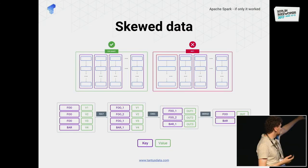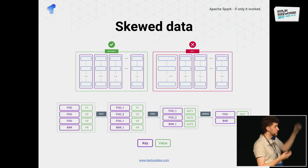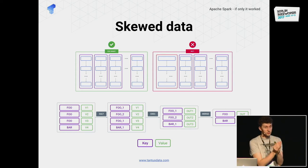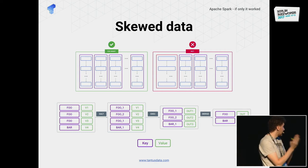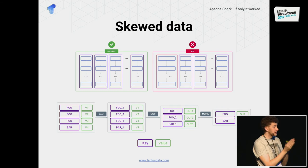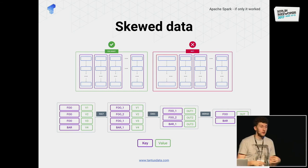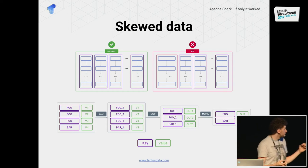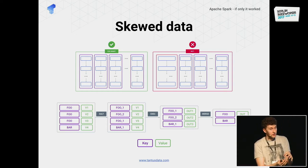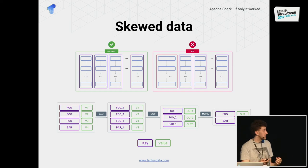A general technique to deal with this kind of problem is introducing salt to your keys — introducing some randomness. For instance, if you have too many records with the same key 'foo' and you want to split them across multiple tasks, you add random values to the keys so they can be processed separately. You are then responsible for merging the results back together, clearing the randomness you introduced, and making sure your business logic stays correct.